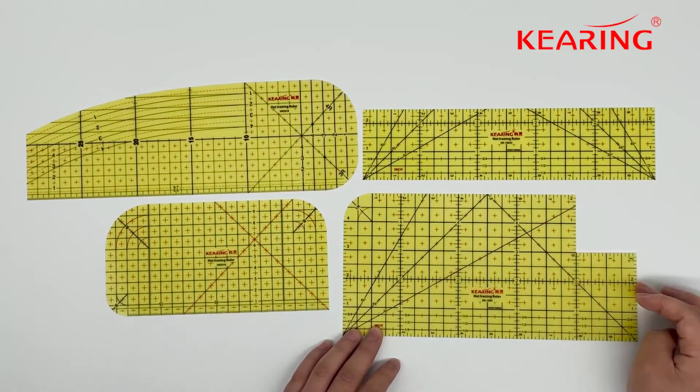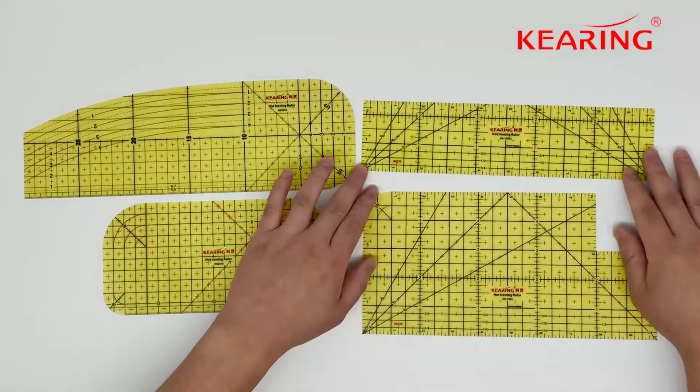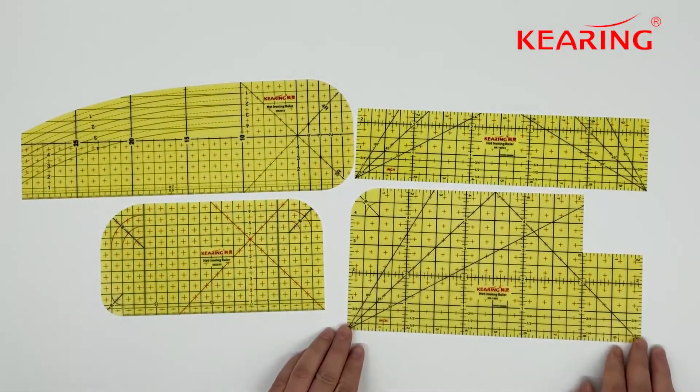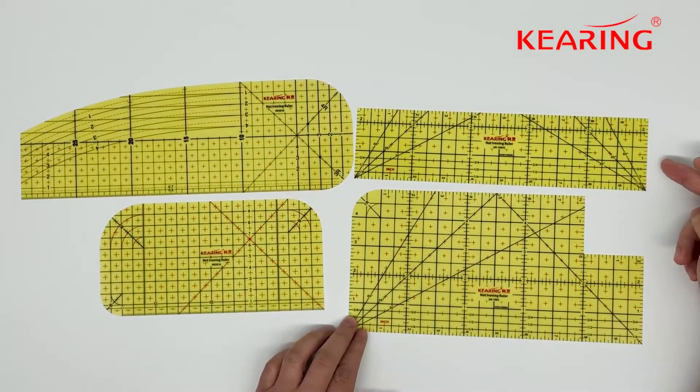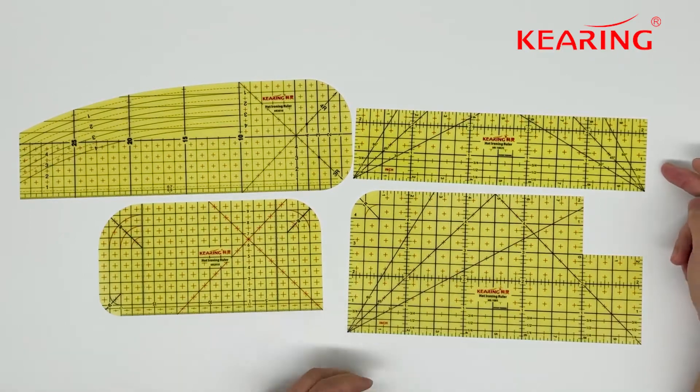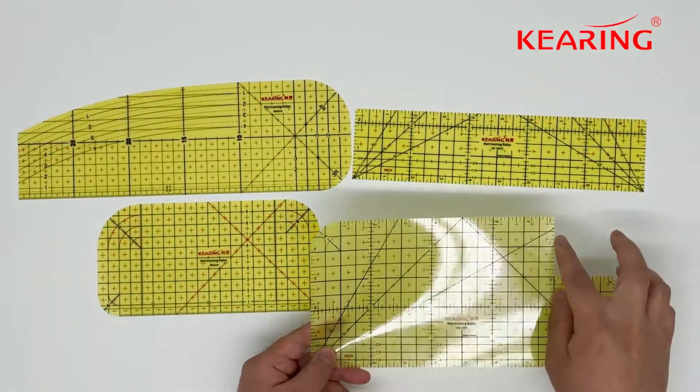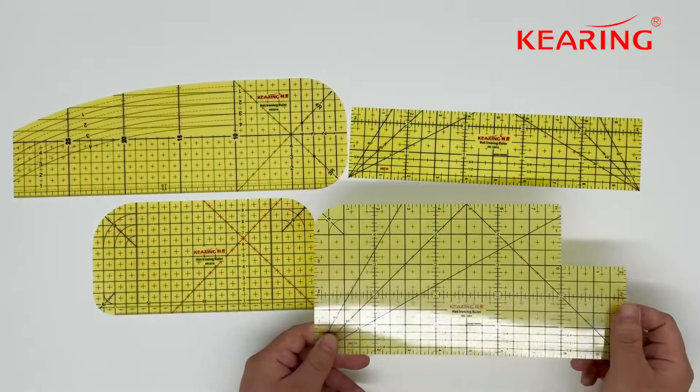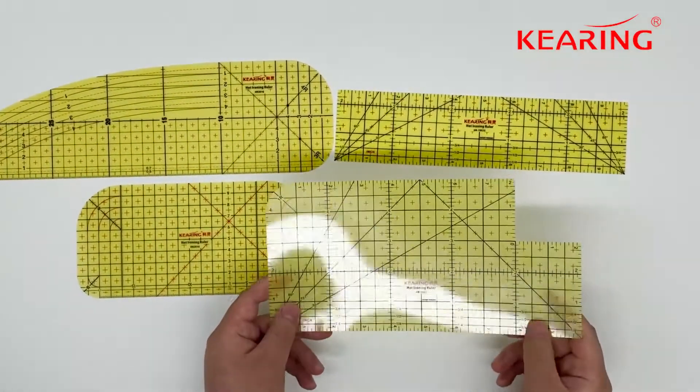These two are both 10 inches in length. This one is a regular rectangle design ruler, and this one is a little bit special with a corner cutoff design. We'd like to talk a little more and let everyone know why Kirin hot ironing rulers could be such a popular product.